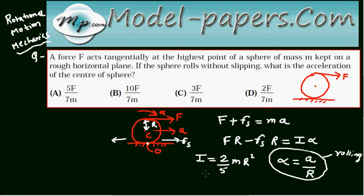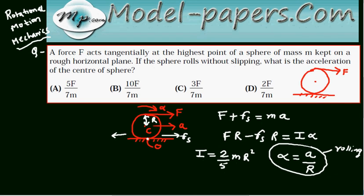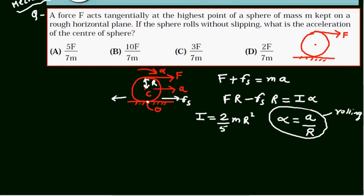Putting these values in this equation, we can simplify: FR minus F_s times R equals 2/5 M R squared times A/R.